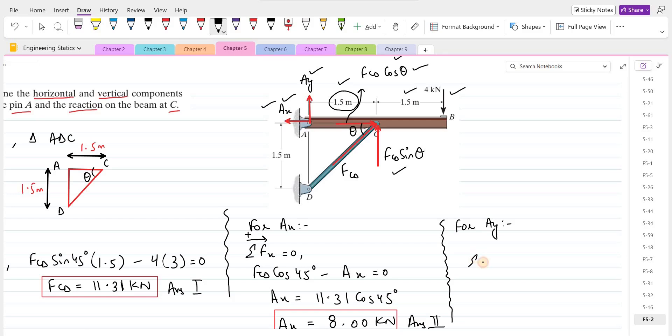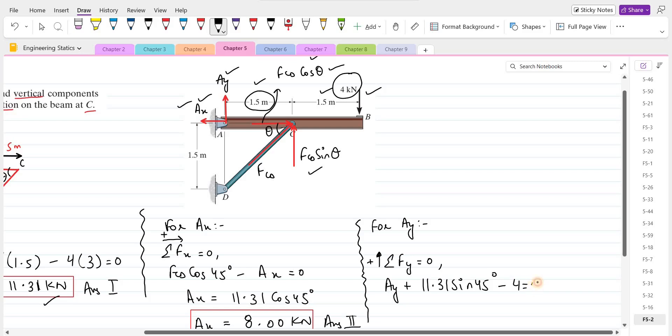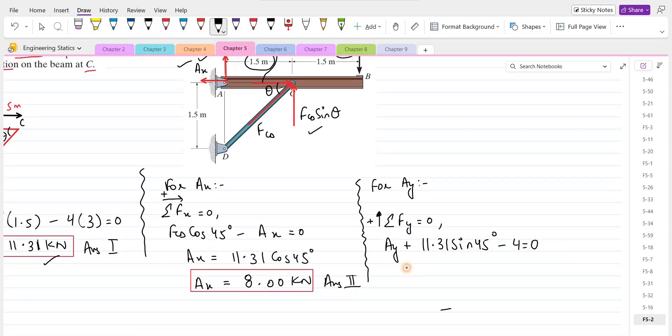We can do summation of forces in y direction equals to 0. For the support reaction Ay, plus FCD sin theta, and FCD is 11.31, so 11.31 sin 45 degrees minus 4 kilonewtons equals to 0. Ay comes out to be negative 4 kilonewtons.